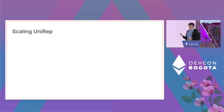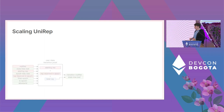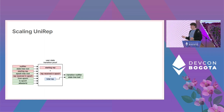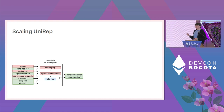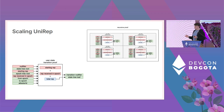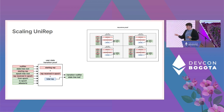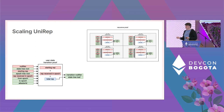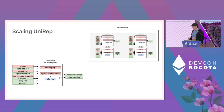How can we scale UniRep and ZK proofs given those bottlenecks? The user state transition proof has about seven public signals — for every user joining a new epoch, we make one proof and verify it on-chain. To make this more efficient, we can use recursive proofs: users make a proof, send it to an aggregator, and the aggregator proves that four proofs are valid and outputs one proof — reducing verification by a factor of four. We can also reduce public signals by forming a hash chain on-chain.